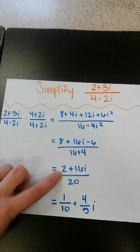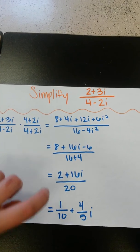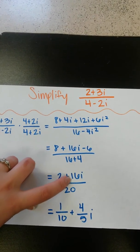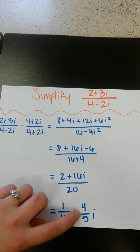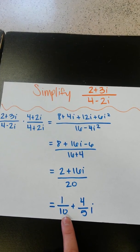So then we reduce this by saying 2 over 20, which is equal to 1 tenth when reduced. And 16i over 20, which is reduced to 4 fifths i. And we've written it in this form because it is a plus bi form.